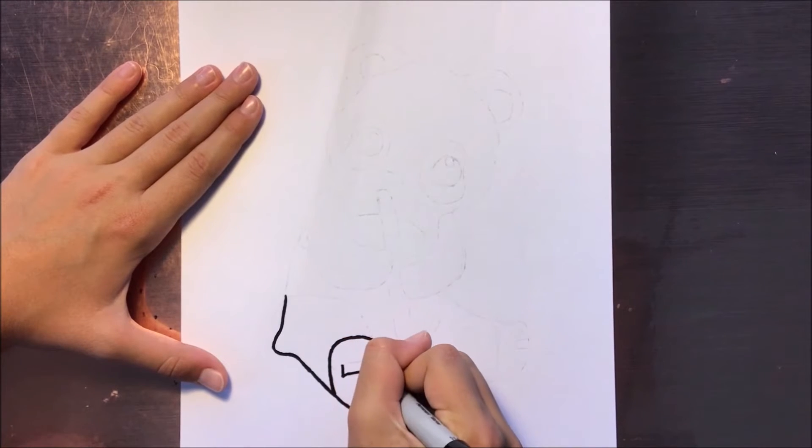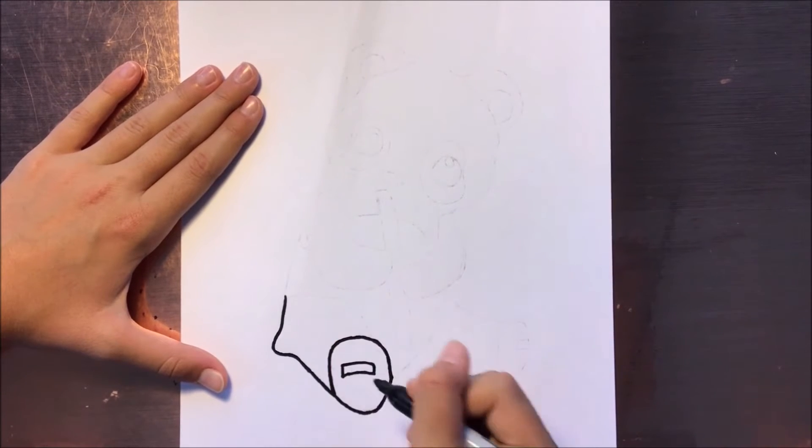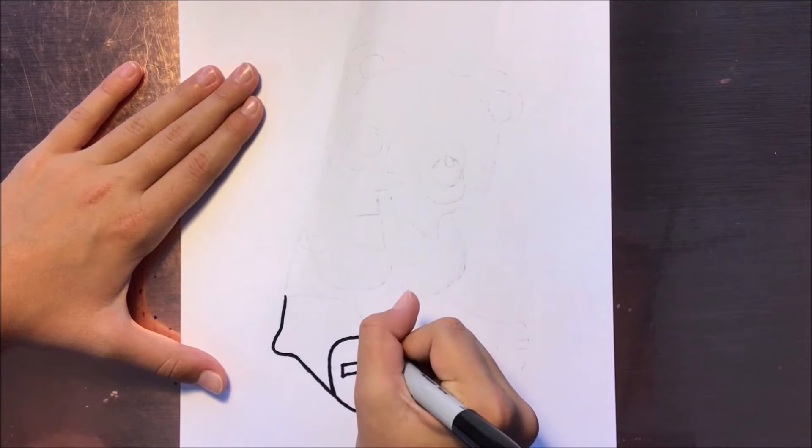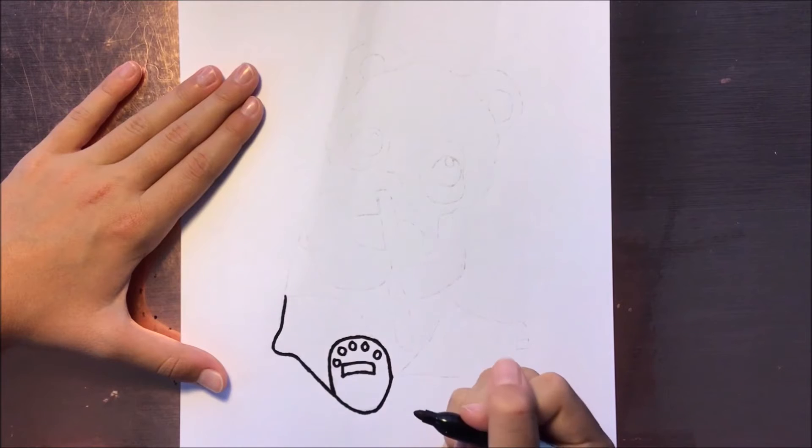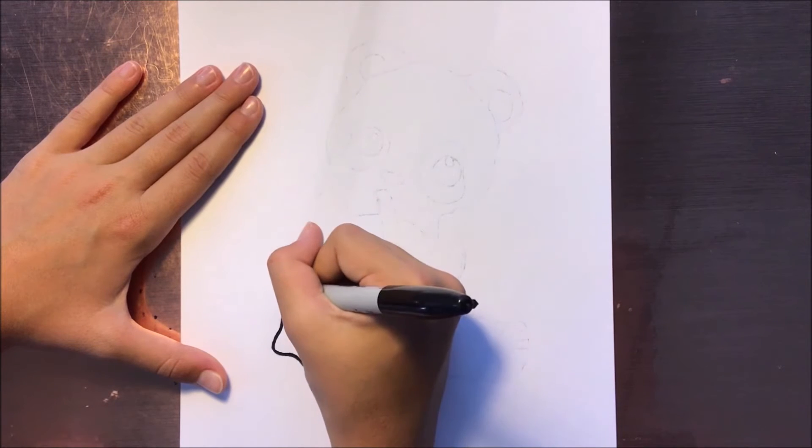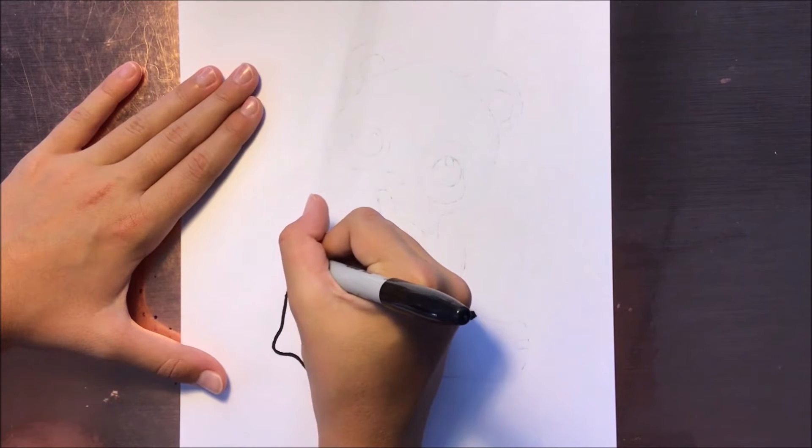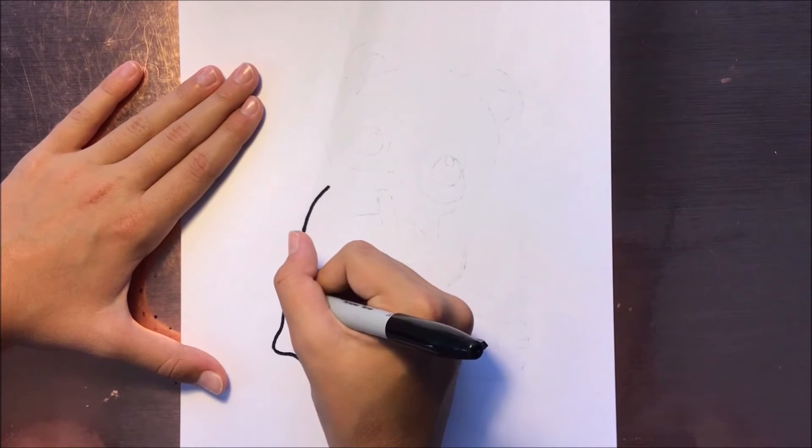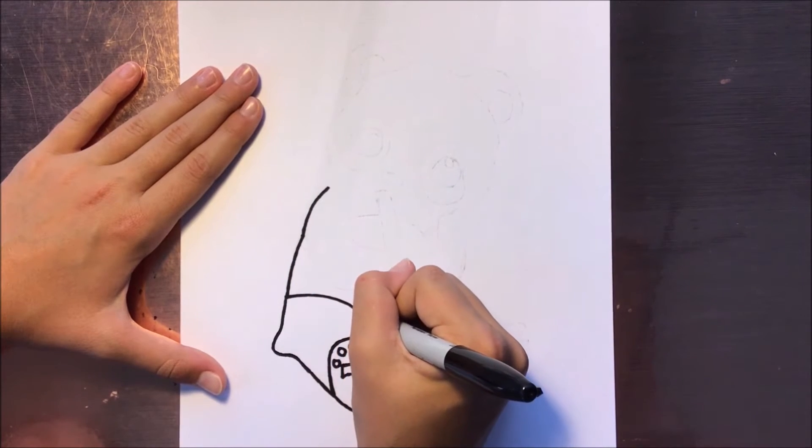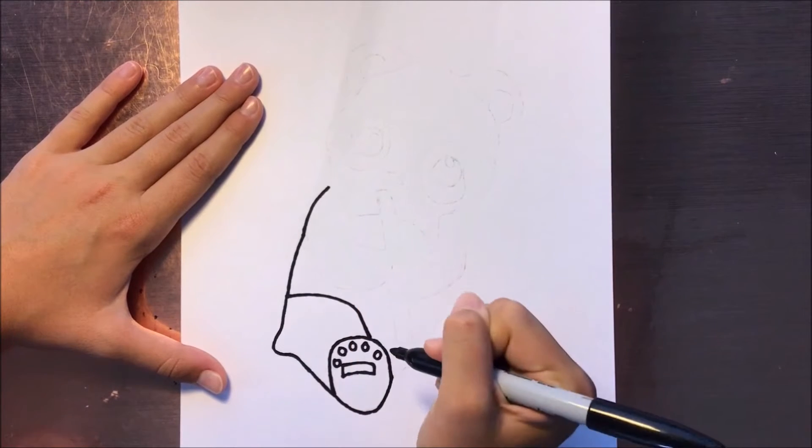I'm just going to do a little square like this and then some circles around, about five. Now let's continue this line all the way up here. Then we're going to do a bit over here because pandas are black and white, so we'll have some patches.